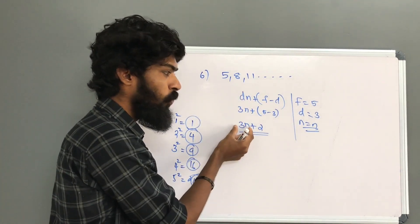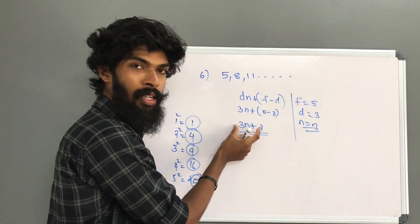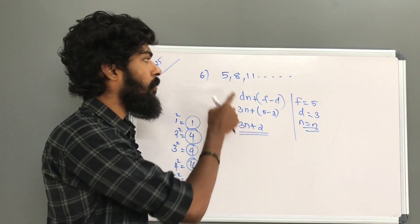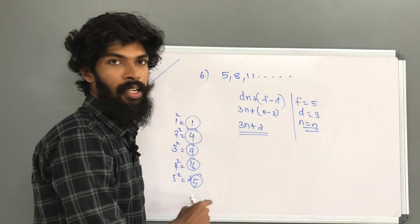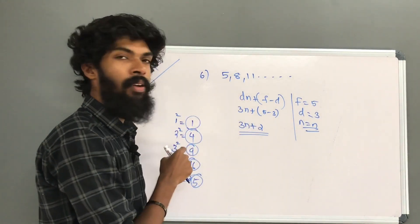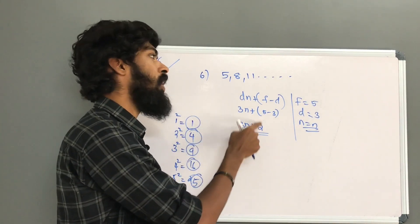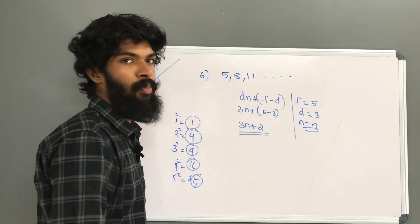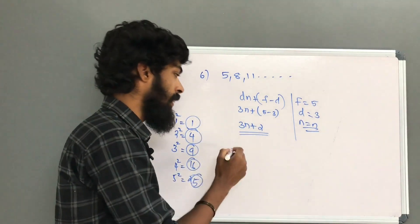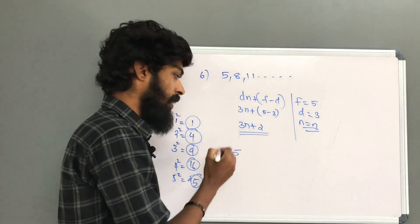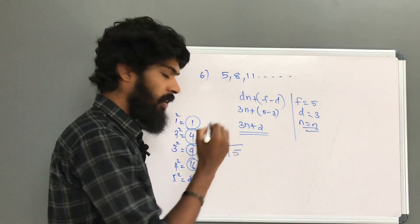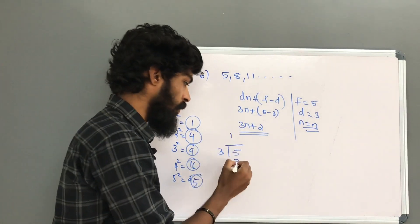It's equal to this: 1 plus 2 is 5. Then 5, 3, 2 — 3, 3, 5 — 5, 5, 5, 5, 2, 2. Now we will move on.